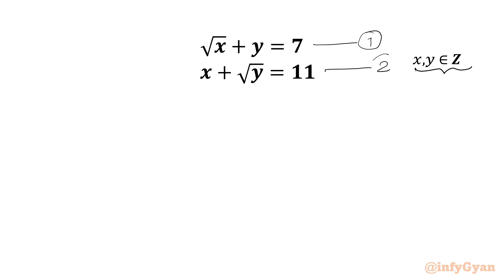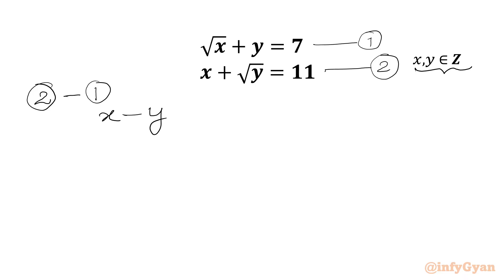This is our equation number 2. Now we will take away the first equation from the second one, so equation 2 minus equation 1. We will get x minus y plus root y minus square root x will be equal to 11 minus 7.